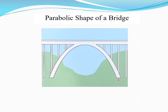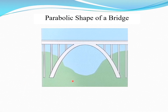In everyday life, where would you see parabolic shapes? This is an example of a bridge — a parabola shape — used in the suspension and that sort of thing. The rainbow that you see in the sky would also be a parabola shape.